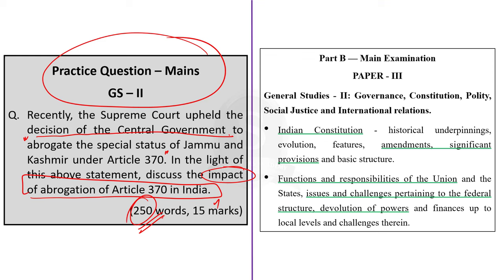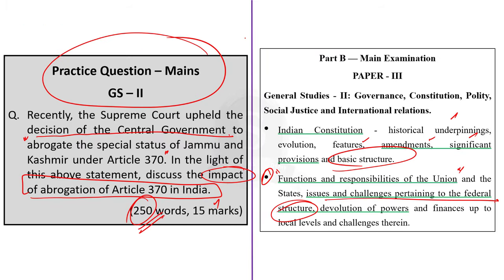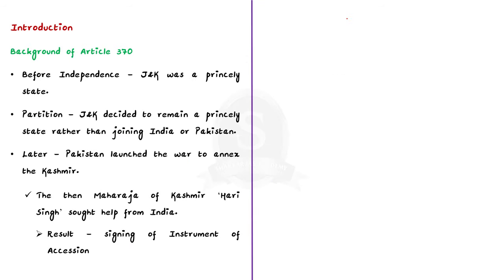This type of question can be asked in GS Paper 2 under the syllabus of Indian Constitution — historical underpinnings, evolution, features, amendments, significant provisions, and basic structure — and also under functions and responsibilities of the union and states, issues and challenges pertaining to federal structures. The keyword here is 'discuss,' which means we have to write a written debate providing pros and cons with valid evidence. Since the question is about Article 370, we can write about the background of 370 in our introduction. Before India's independence, J&K was a princely state.